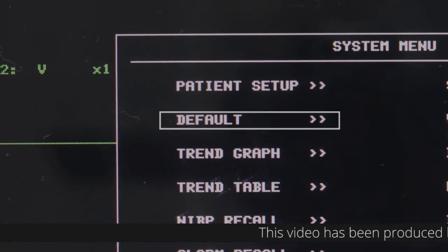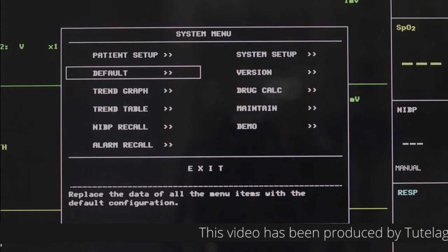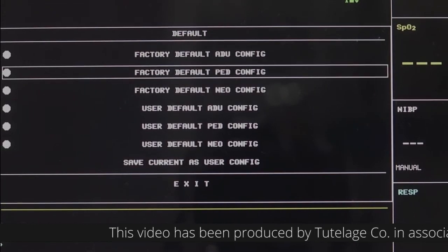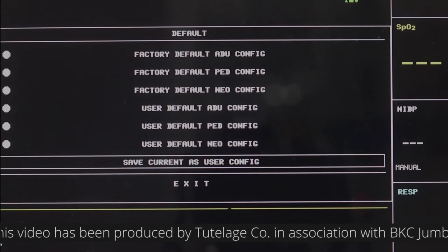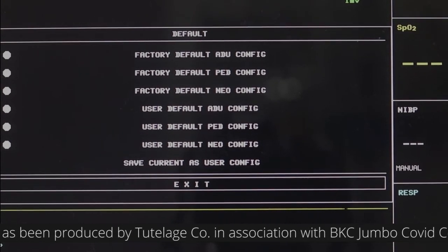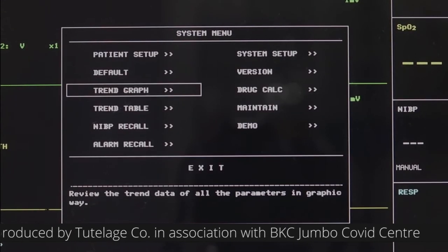Default Setup: There are two types of default configurations, factory and user defined. You can also save the current system configuration as the user defined configuration. Click on exit to return to the system menu dialog box.